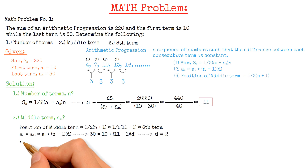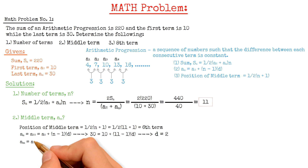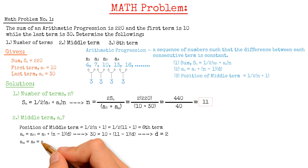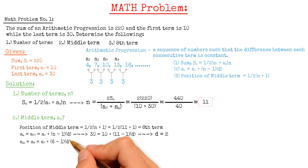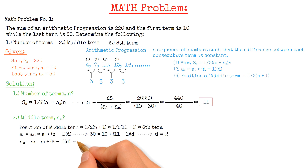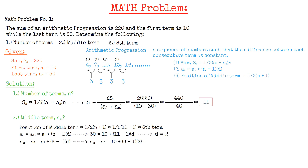To calculate the 6th term using the formula, a6 equals 10 plus (6 minus 1) multiplied by 2. That gives us a6 equals 20.